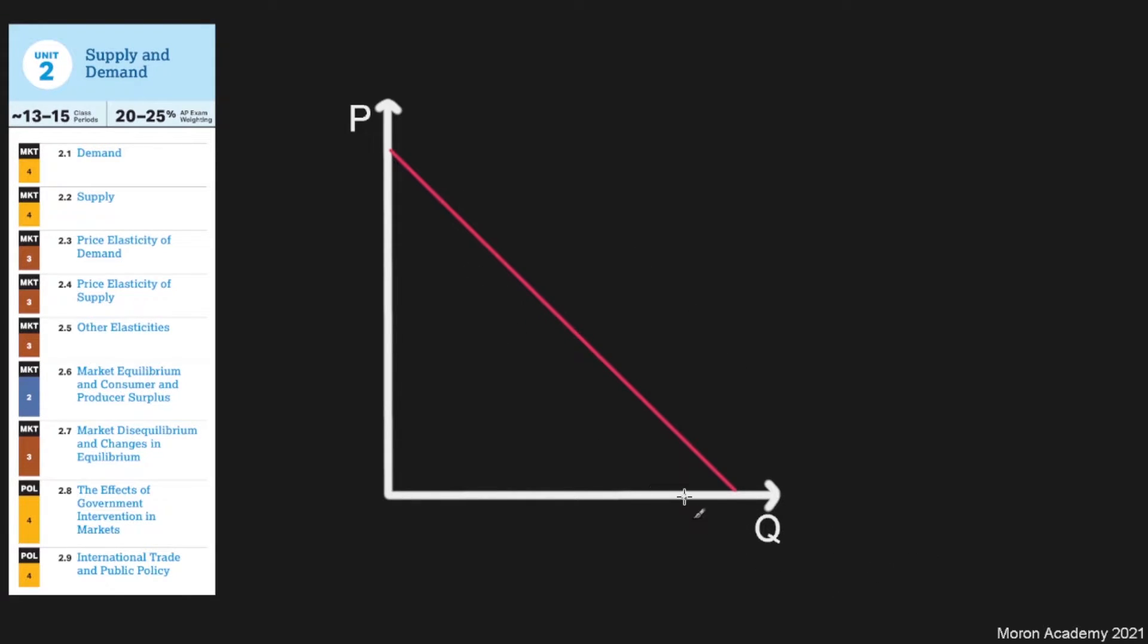Demand could either be a straight line like the one I've drawn here, or a slope like this. It doesn't really matter, but you do need to know that it always goes from top left to bottom right, while supply, on the other hand, goes from bottom left to top right.